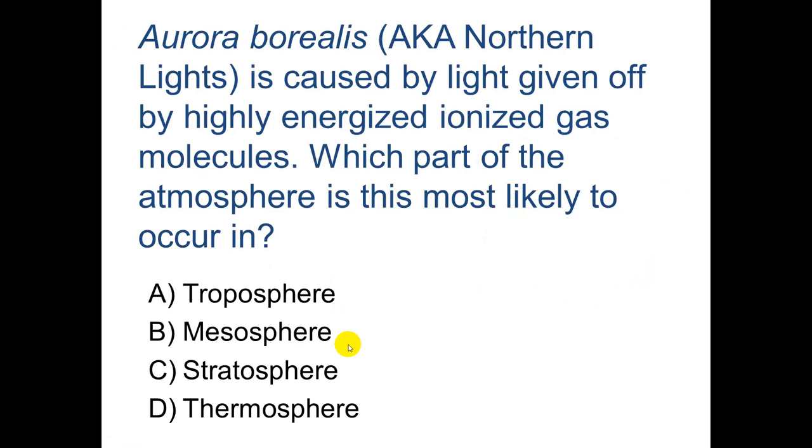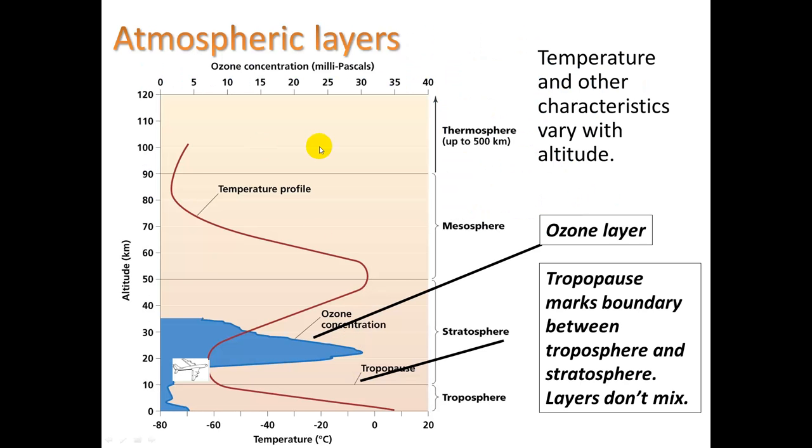Another question for you. Aurora Borealis, aka Northern Lights, is caused by light given off by highly energized ionized gas molecules. Which part of the atmosphere is this most likely to occur in? Pause. All right. Welcome back. If you said the thermosphere, that is correct. It is the atmosphere that is farthest from the surface, closest to space.